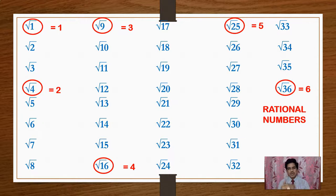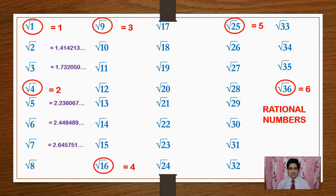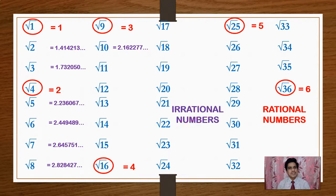For numbers like root 2, root 3, root 5, root 6, root 7 up to root 35 — for example, root 2 is 1.1412 and so on, root 3 is 1.7320 and so on. These are non-terminating and non-recurring decimals, so these numbers are actually Irrational Numbers.